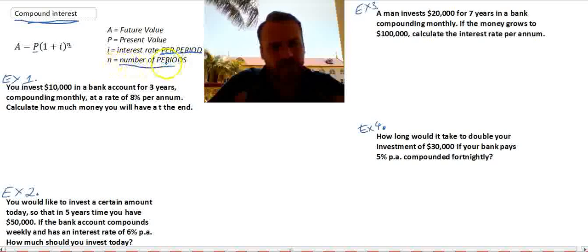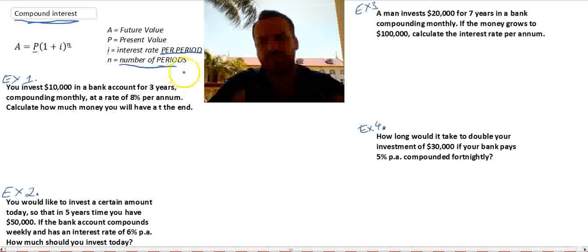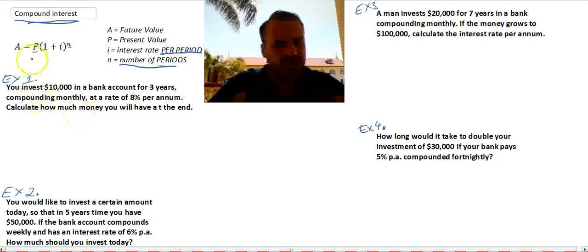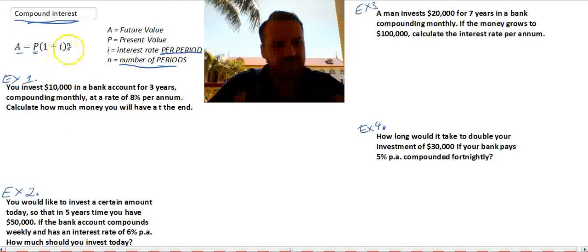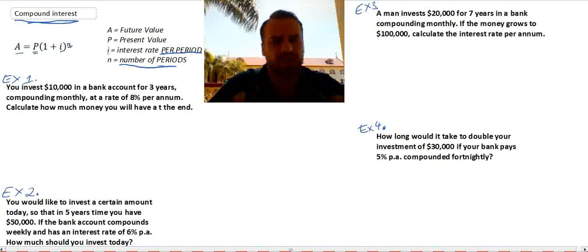Now, the number of periods is important. It's not the number of years, it's the number of periods. Now, I'm going to jump through four different questions. Those four different questions are going to find the A value, which is really simple. We're going to find the P value. We're also going to find the I value. And then we're finally going to find the N value. So we've got four different types of questions. This formula's got four variables, so there's four different types of questions we might be able to ask.